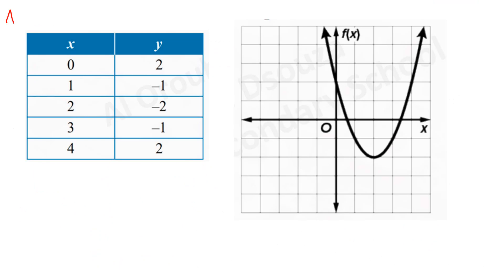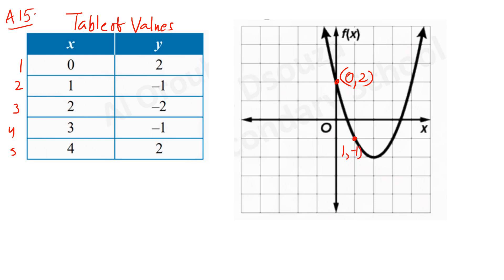This is the final answer for question 15. The five points plotted are: (0, 2), (1, -1), (2, -2) which is the vertex, (3, -1), and (4, 2). The axis of symmetry passes through x = 2, obtained from the formula x = -b/2a. Joining the dots gives you the parabola graph.